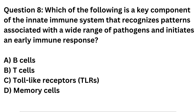Question 8. Which of the following is a key component of the innate immune system that recognizes patterns associated with a wide range of pathogens and initiates an early immune response? A. B-cells. B. T-cells. C. Toll-like receptors (TLRs). D. Memory cells.